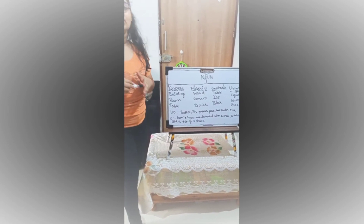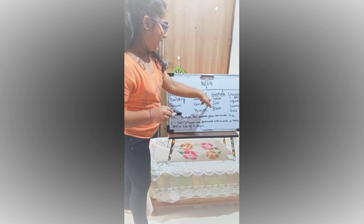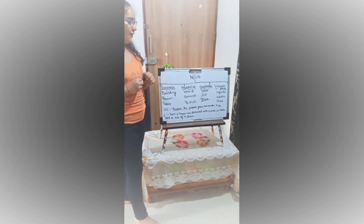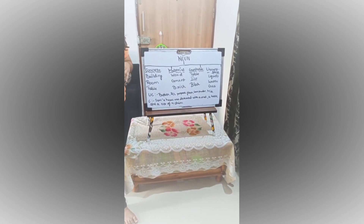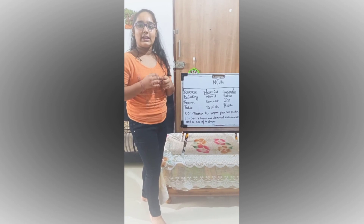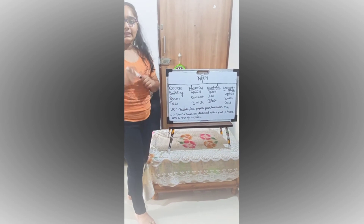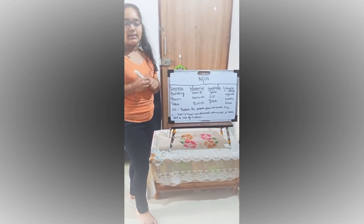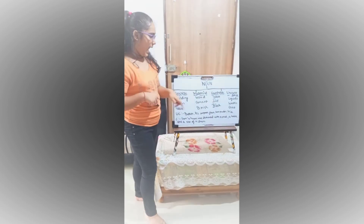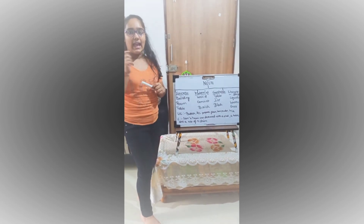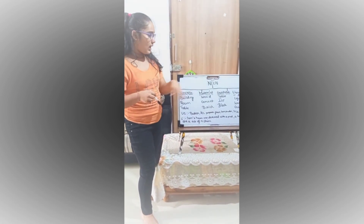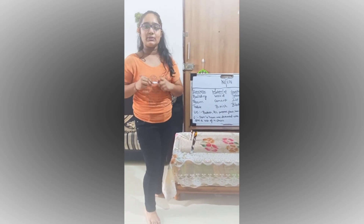Next we have countable nouns — things which can be counted, like table, ice block. Next we have uncountable nouns. Take note that all liquids and gases are uncountable nouns — for example, juice, water, gas, milk. We need to add a quantifier before these uncountable nouns to make them countable, like: I need a glass of water, I need some gas. By adding quantifiers like one glass, one liter, some — we change the uncountable nouns into countable nouns.